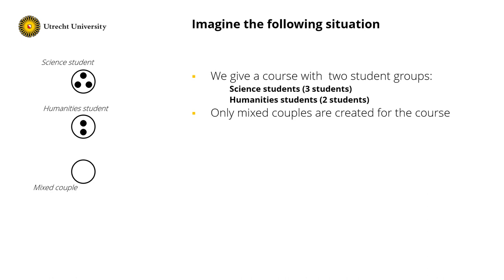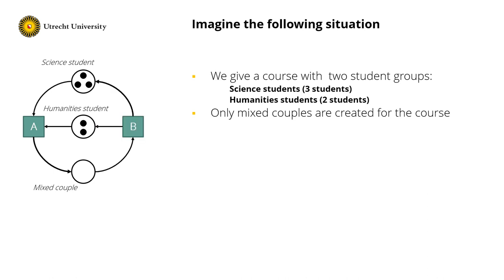Next I need to create a couple, so I take a transition, I name it A, and it takes one science student and one humanities student and produces a mixed couple. Similarly, at the end of the course we want to decouple them, so we have transition B: it takes a couple and produces one token in the humanities student place and one token in the science student place.